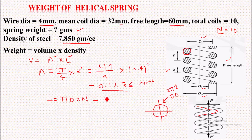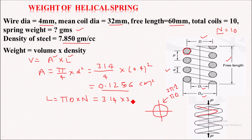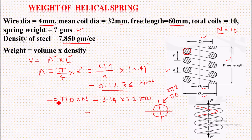Pi can be taken as 3.14. Capital D is nothing but the mean coil diameter, that is 32 mm, which in centimeters is 3.2 cm. Multiplying by N — we have total coils of 10. So if we solve this, we get the total length of the coil coming to 100.48 centimeters.